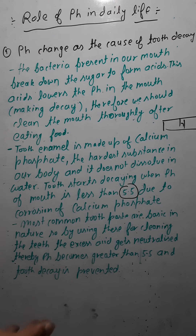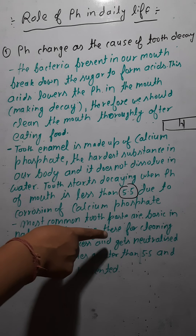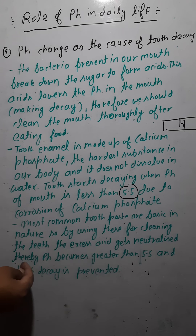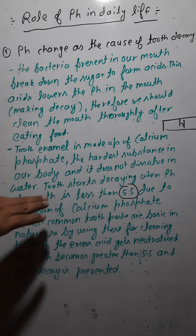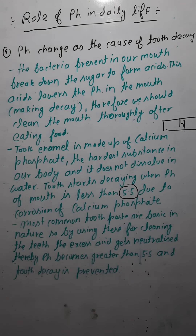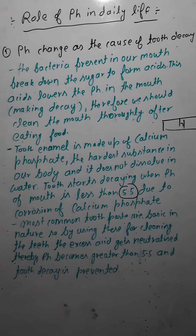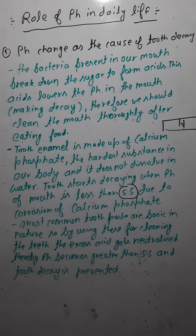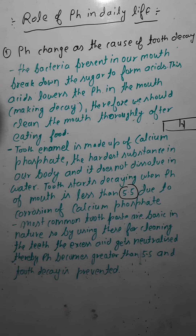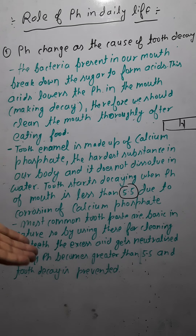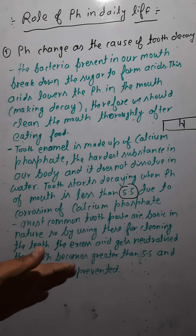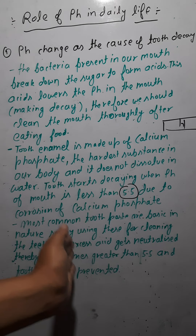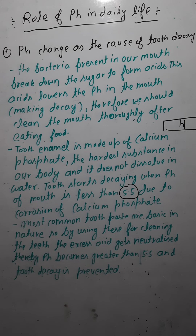Most toothpastes are basic in nature. They neutralize the excess acid in our mouth, increasing the pH. If pH becomes more than 5.5, tooth decay can be prevented. This is how toothpaste helps in preventing tooth decay.